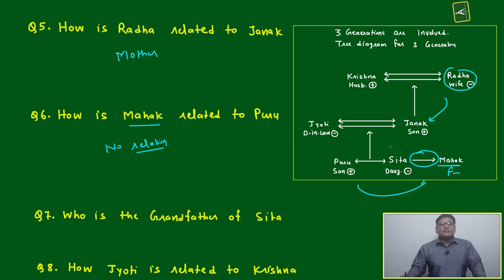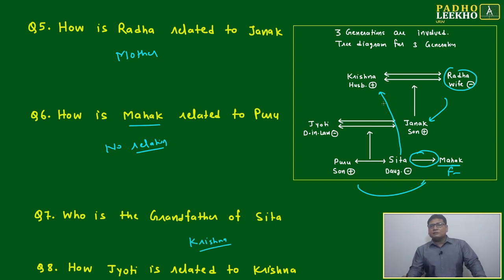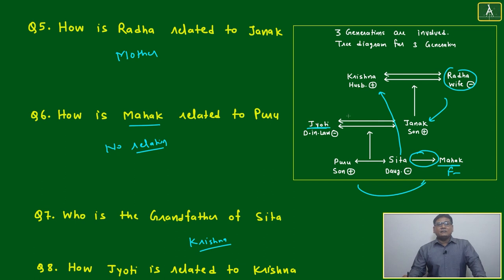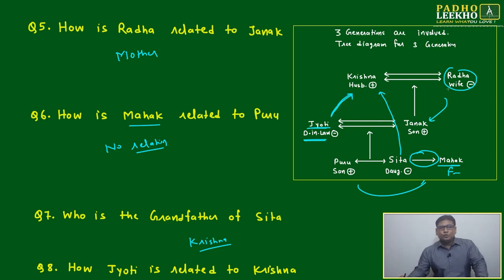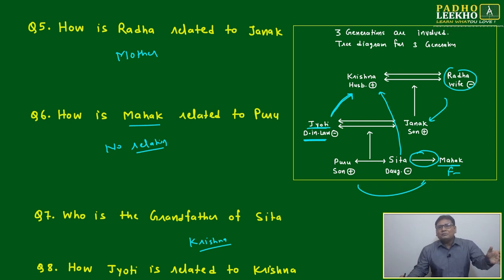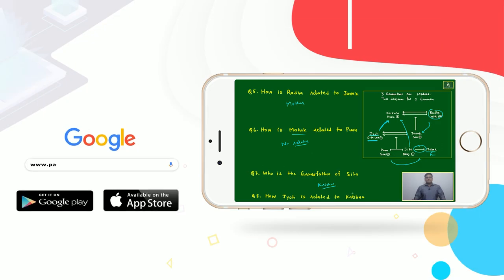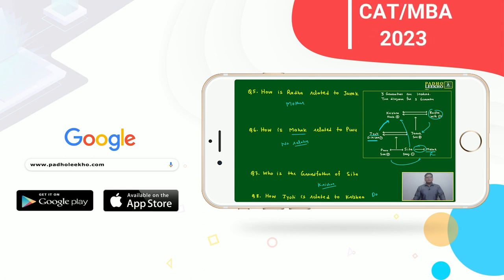Who is the grandfather of Sita? Father's father: Sita's father is Janak, and Janak's father is Krishna — so Krishna is the grandfather. How is Jyoti related to Krishna? If Jyoti is the daughter-in-law of Radha, then by default Jyoti is also the daughter-in-law of Krishna, because Krishna and Radha are husband and wife. So the relation is daughter-in-law. Conversely, how is Krishna related to Jyoti? Just the reverse — father-in-law.